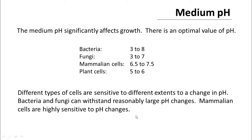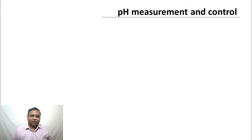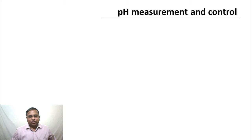The metabolism in cells causes acids to form. Lactic acid is a very common byproduct of mammalian cell metabolism, which gets secreted and can reduce medium pH, causing acidification. Alkalinization can also happen in different situations. For microalgae cultivation, carbon dioxide in air dissolves to produce carbonic acid, and this carbonic acid buffer system is part of the process of growing photosynthetic microalgae in bioreactors.